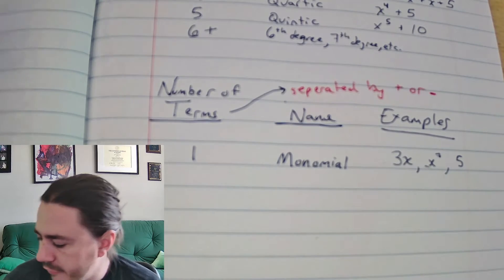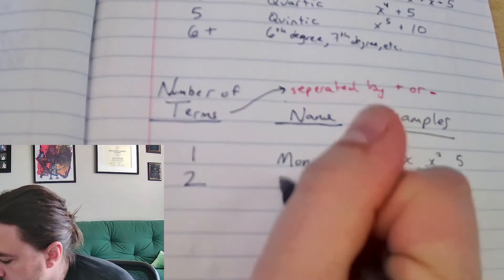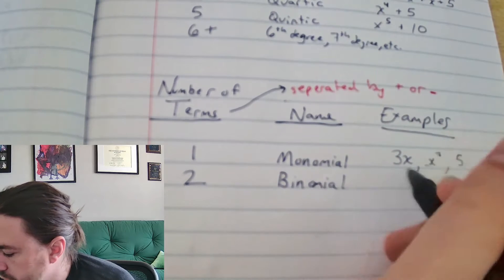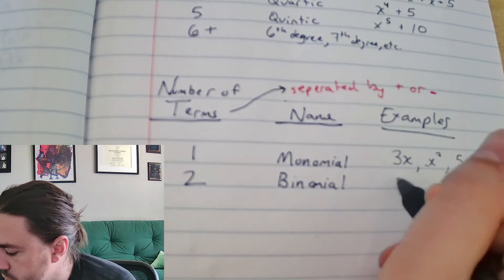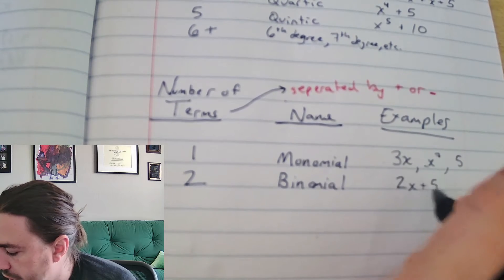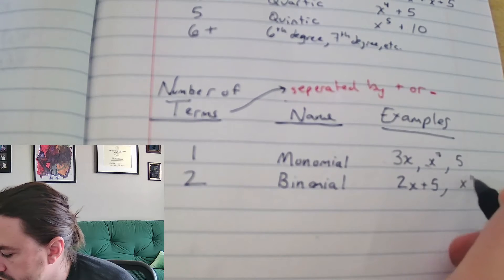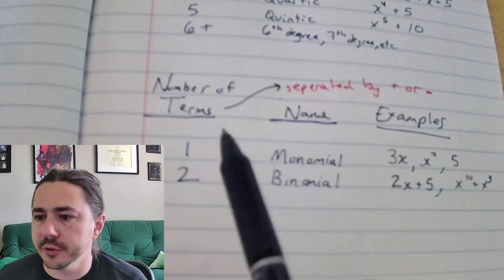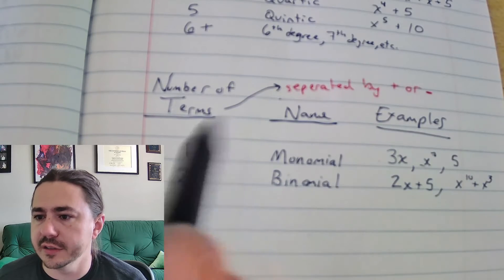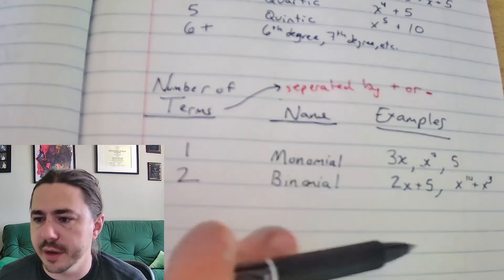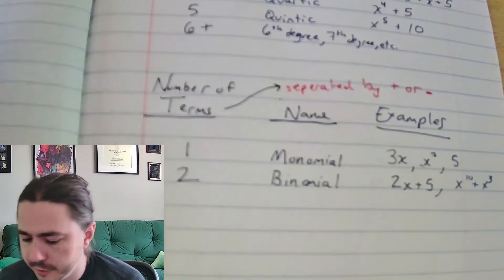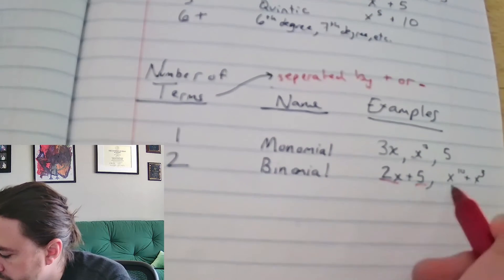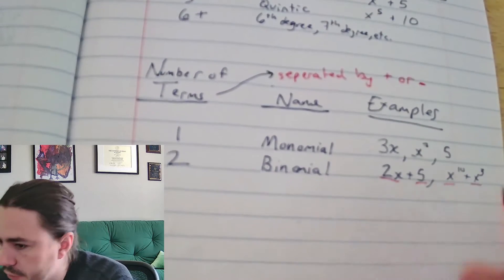If you have two terms, that's called a binomial. A binomial is something with two terms, like 2x plus 5, or x to the tenth plus x cubed. The degree here is not going to affect whether it's a monomial or binomial — it's the number of terms. Notice that these terms are separated by either a plus or minus.